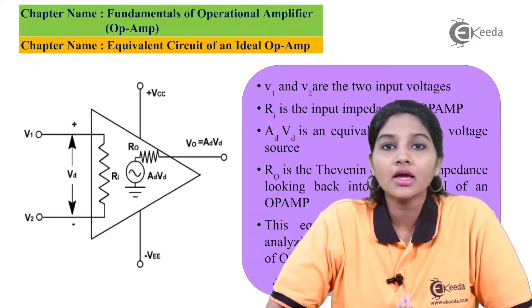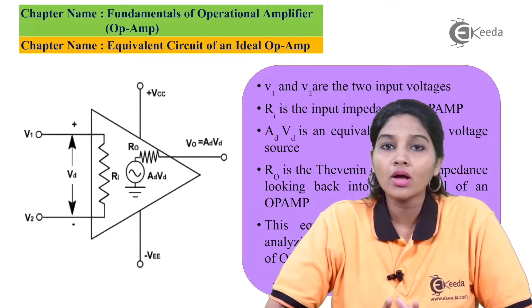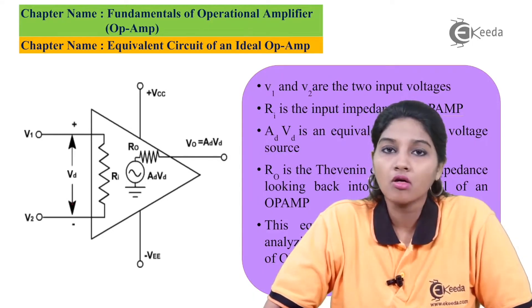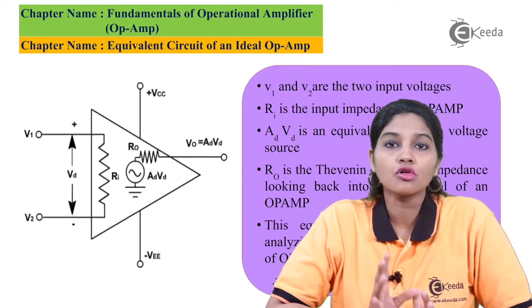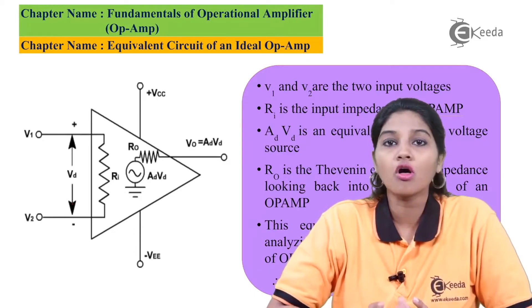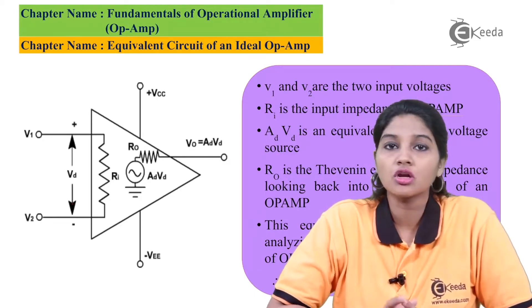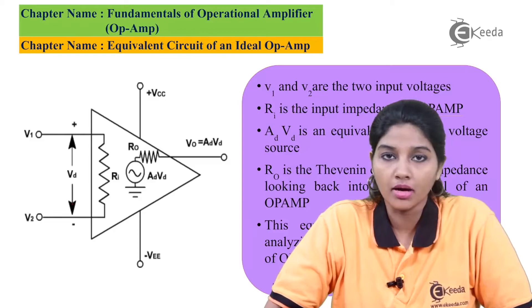Now from the diagram, we will come to know that the equivalent circuit of an ideal op-amp consists of various signals or various parameters which are called as open-loop parameters.